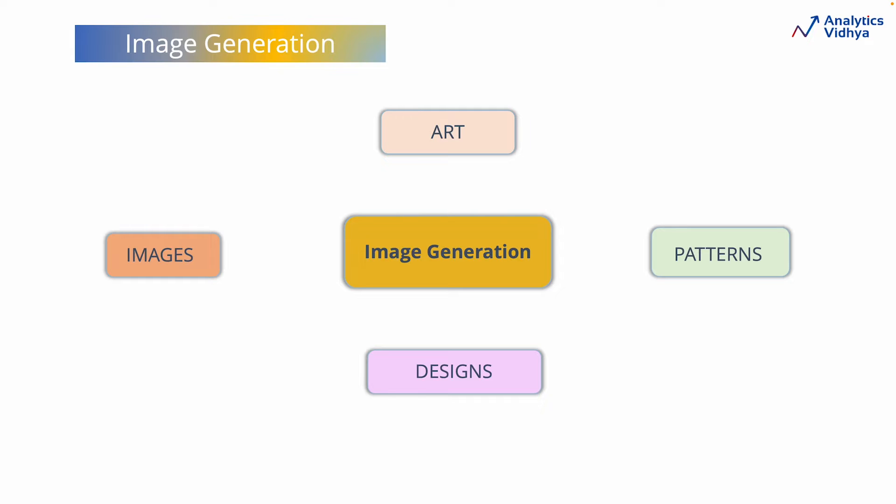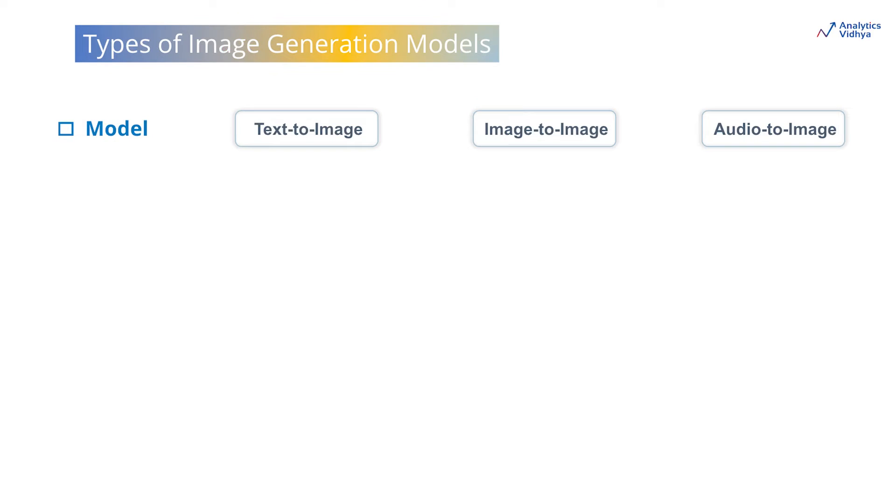Image generation is a type of Generative AI that involves creation of new images, new designs, patterns, or even art based on a set of instructions provided by the user. Images can be generated by using different kinds of prompts. The prompts could be text, image, or even audio.